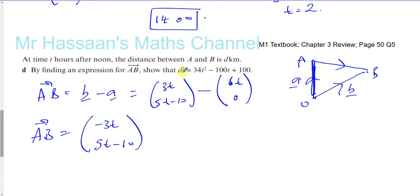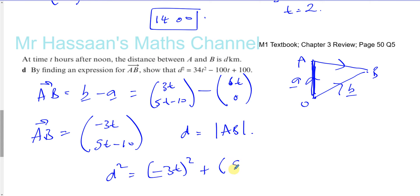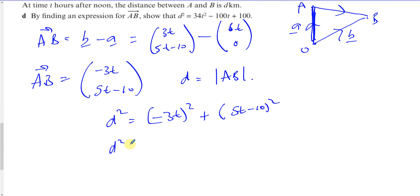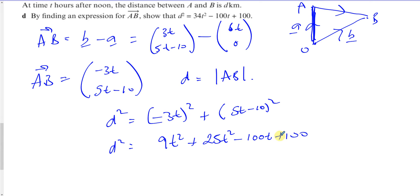Since d is the magnitude of vector AB, d squared equals the i component squared plus the j component squared. That's (-3t)² plus (5t minus 10)², which expands to 9t² plus 25t² minus 100t plus 100. So d squared equals 34t² minus 100t plus 100. That's part D.